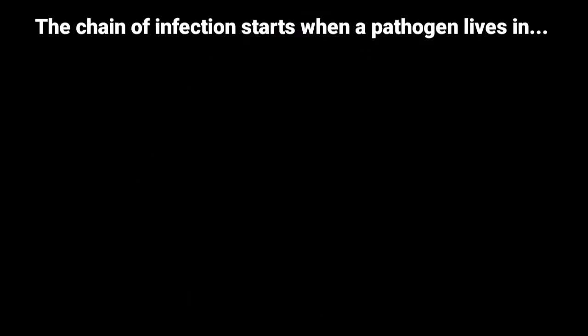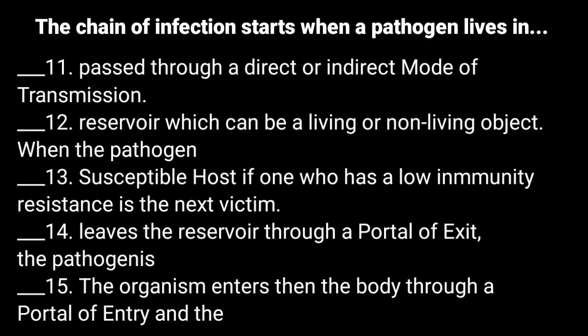Number 10: The chain of infection starts when a pathogen lives in a reservoir, which can be a living or non-living object. Number 11: It is passed through a direct or indirect mode of transmission. Number 12: Reservoir which can be a living or non-living object — when the pathogen. Number 13.